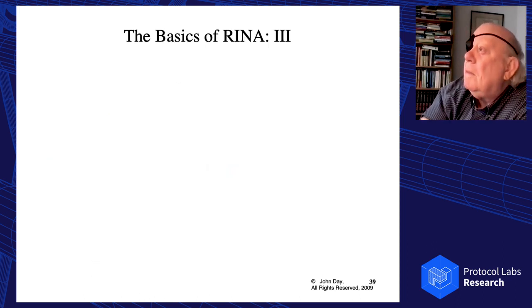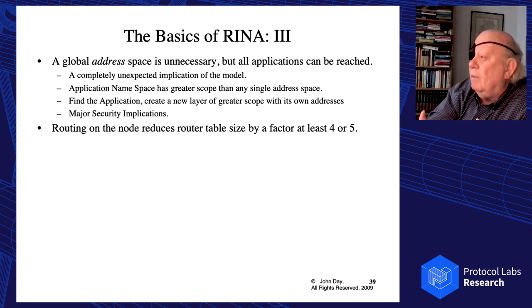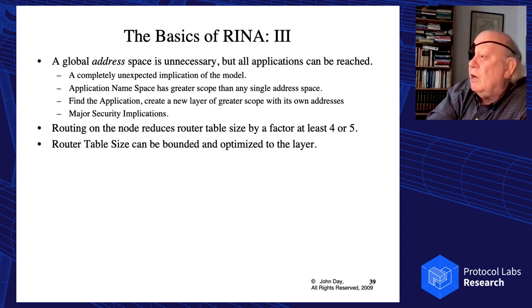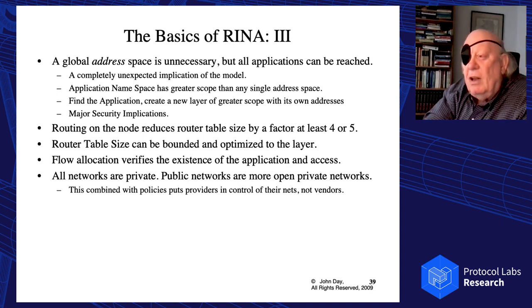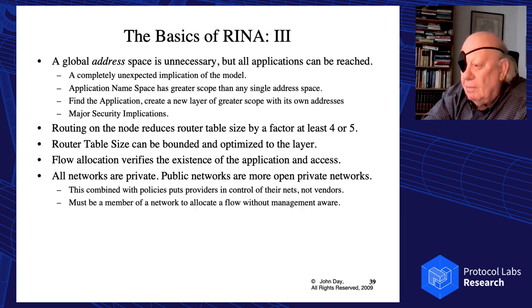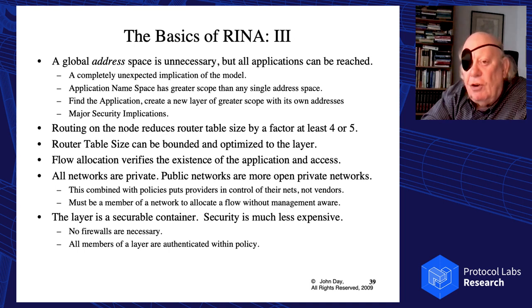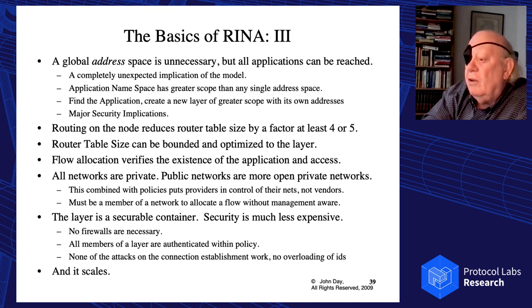A global address space is unnecessary, but all applications could still be reached. This is the network generator function, and it caps the recursion. Routing on the node reduces router table size by a factor of at least four or five. Router table size can be bounded by sizing the layer accordingly and choosing the number of layers you want. Flow allocation verifies the existence of the application and does access control. Because addresses are never seen outside the layer, all networks are private — public networks are just more open private networks.